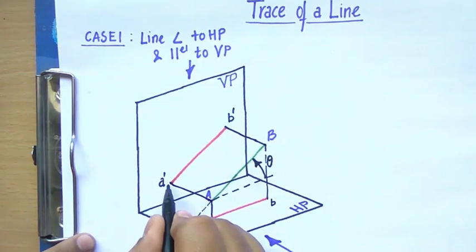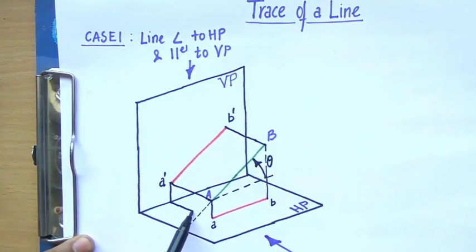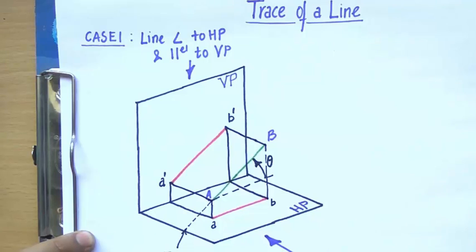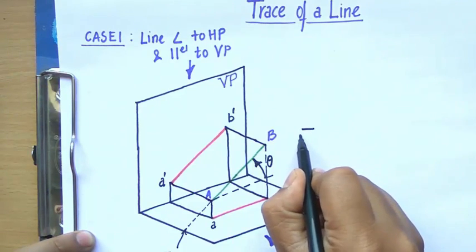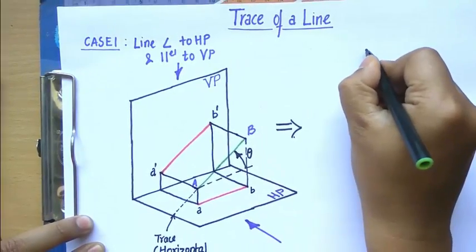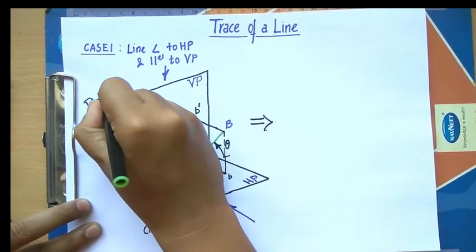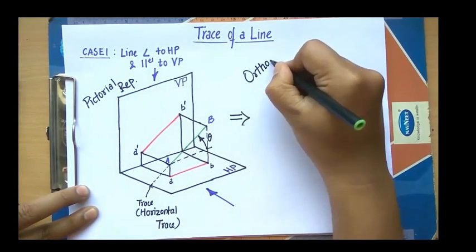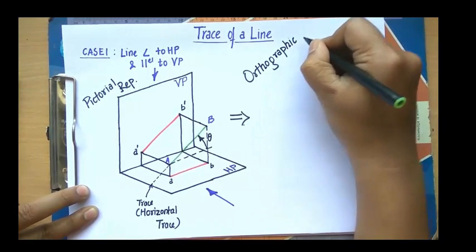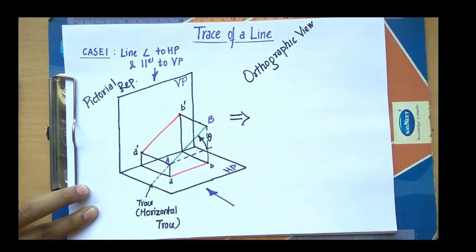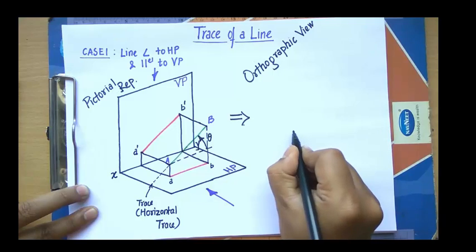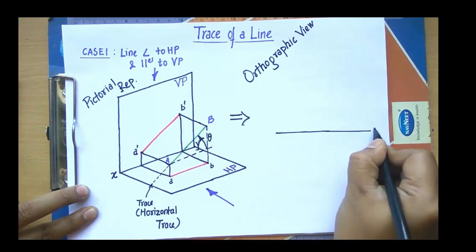That's the pictorial representation. Now let's move to the orthographic view. We'll join the front view with the top view. The pictorial representation was only for explanation. Now I'll draw the corresponding orthographic projection. For that, we have this XY line — X on one side and Y on the other. Let's draw the XY line here.